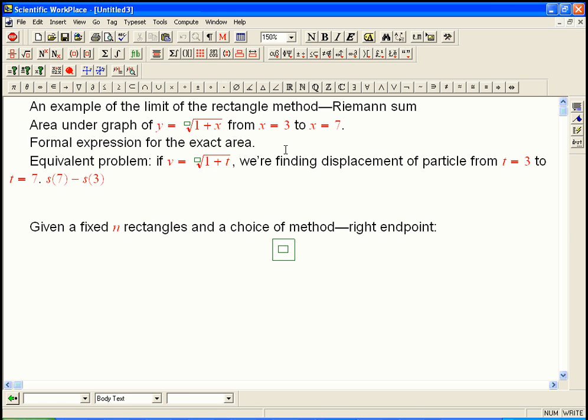The first thing we need to do is get our delta x. That's always, always, always b minus a over n. And that's 7 minus 3 over n, or 4 over n. And what's going to make this a little different from some problems is that we're not actually going to put in n as a number. It's going to be a variable, and we're eventually going to talk about taking the limit as n goes to infinity.